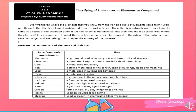How about elements? Elements are the simple substances which cannot be broken down further by chemical means. Elements ay ang pinakasimpling chemical substance dahil binubuo lamang ito ng isang uri ng atom. Ang atoms ay ang pinakamallit na unit ng matter na binubuo ng three particles: protons, neutrons, and electrons.